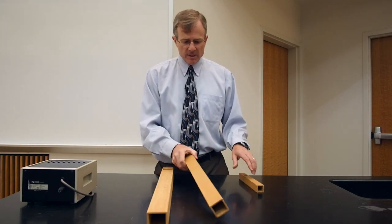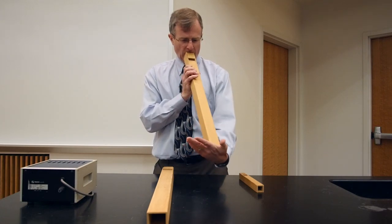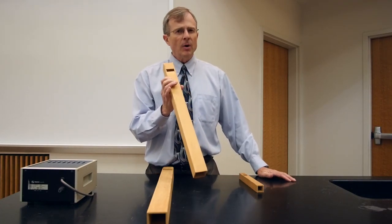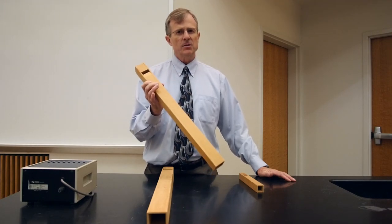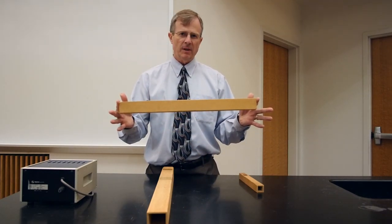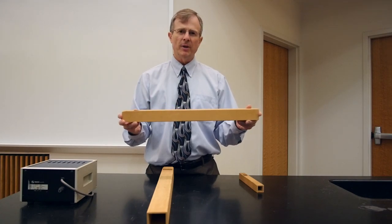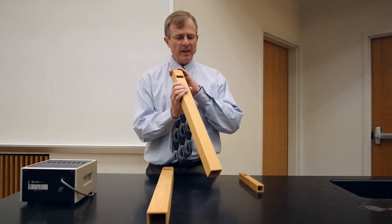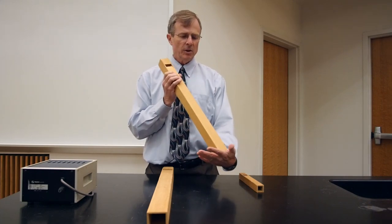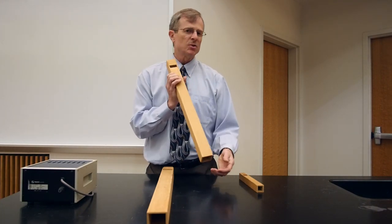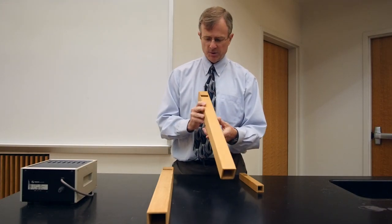That is the reason why a clarinet sounds lower than a flute does. Flute and clarinet both have about the same length. The flute is open on both ends, but the clarinet, the mouthpiece end, is effectively closed. And so the lowest notes you can produce on a clarinet are much lower than the notes you can produce on a flute.